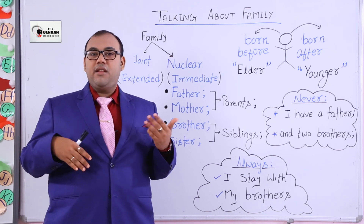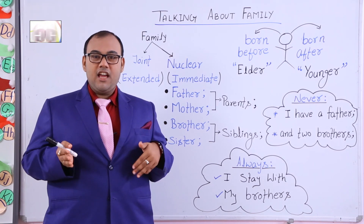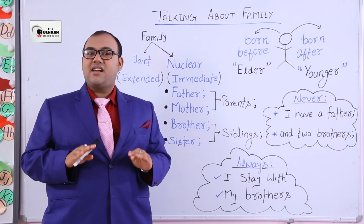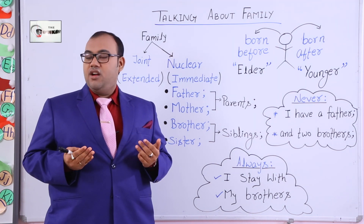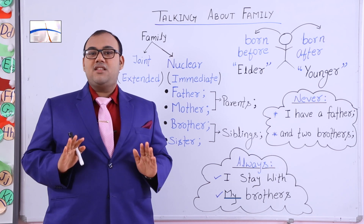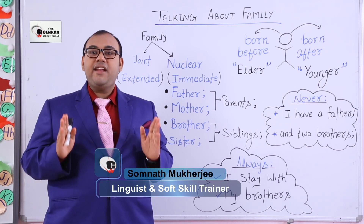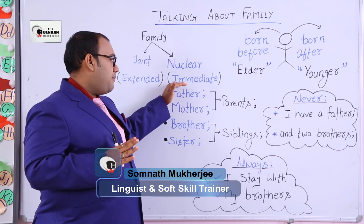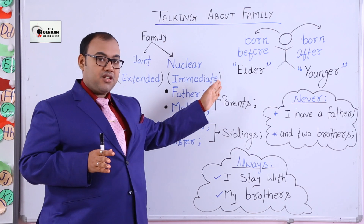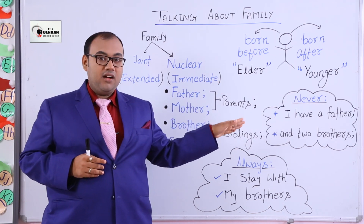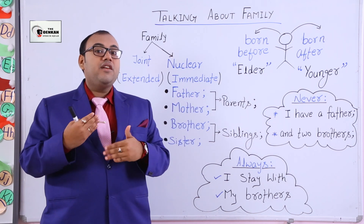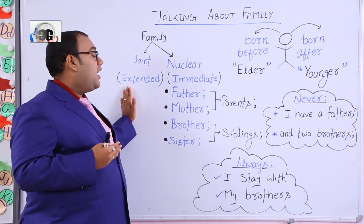Remember, in Indianism we always keep boasting: 'I belong from a Rajput family, I belong from a Brahmin family, I belong from a Kshatriya family' — you are not going to tell about your caste or race. Nobody is interested in knowing which place or race you belong to. Keep your family introduction simple, short, and quick. Just talk about your immediate family, whether you are the only child or have an elder or younger sibling, mention the relationship, and never say 'I have a father' or 'I have two brothers.' We will now move on to the next part, which will be talking about the extended family.